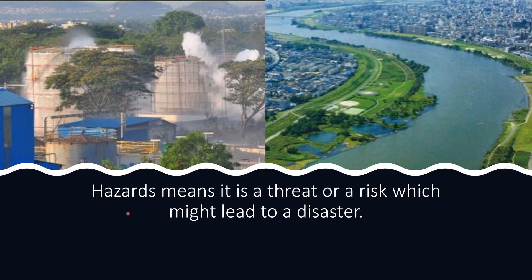Now, what is a hazard? A hazard is a threat or a risk which can lead to a disaster. For example, a river is a hazard to all those living along the banks, because floods can create a disastrous effect on them. Similarly, a leak at a factory producing poisonous chemicals can also lead to a disastrous consequence — such a factory represents a health hazard to the community around it.